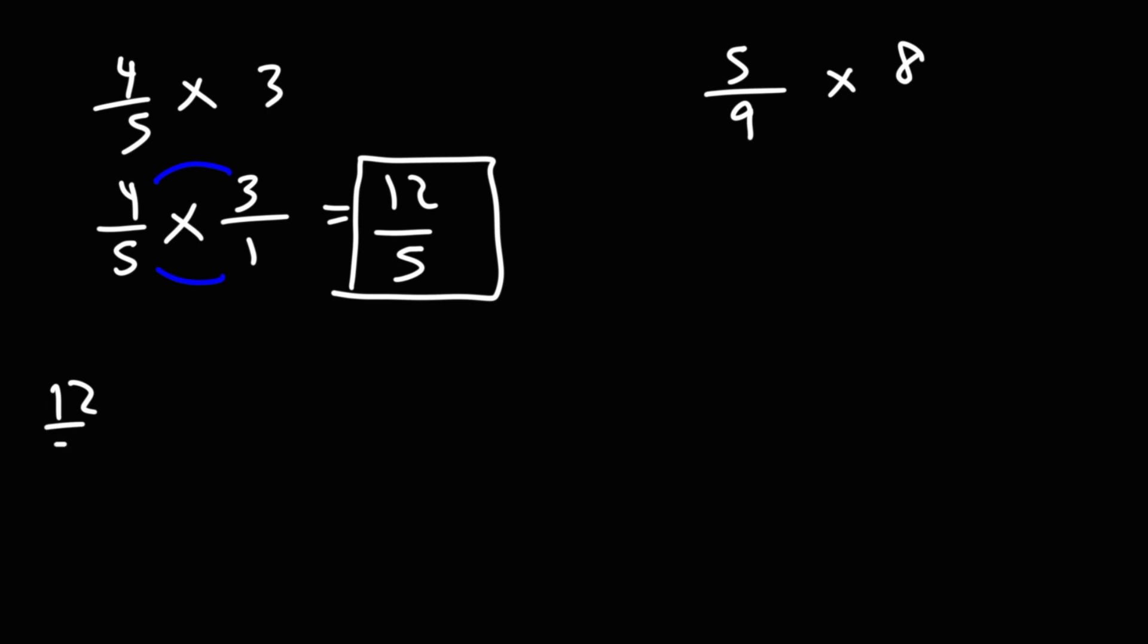To convert it to a mixed number, we can break down 12/5 into 10/5 plus 2/5. 10 plus 2 is 12, and 10 is the highest multiple of 5, just under 12. 10 divided by 5 is 2, so we have 2 plus 2/5, which as a mixed number is 2 and 2/5.